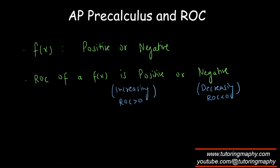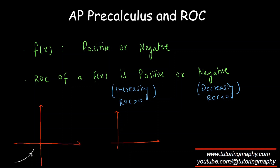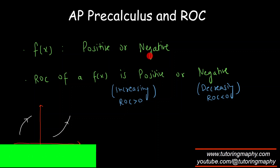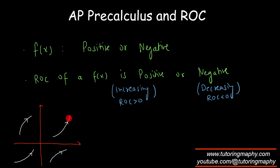This has nothing to do with the sign of the function itself. Let me draw some curves so you understand. If ROC is positive and the function is increasing, it can look like this — it can be in any quadrant, even below the x-axis. Just because the function is negative doesn't mean the ROC cannot be positive. ROC positive simply means the function is increasing, regardless of where it sits on the graph.